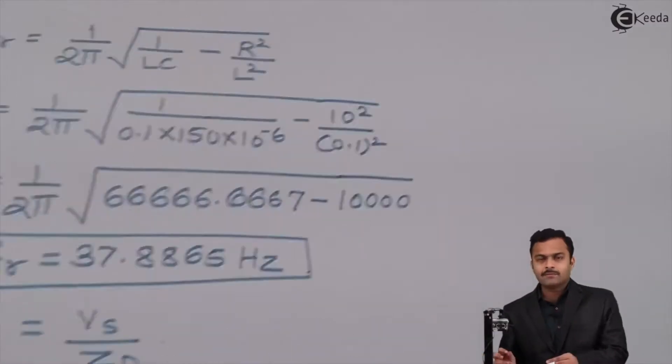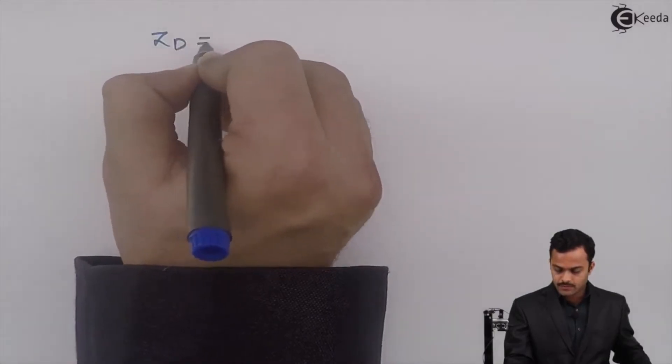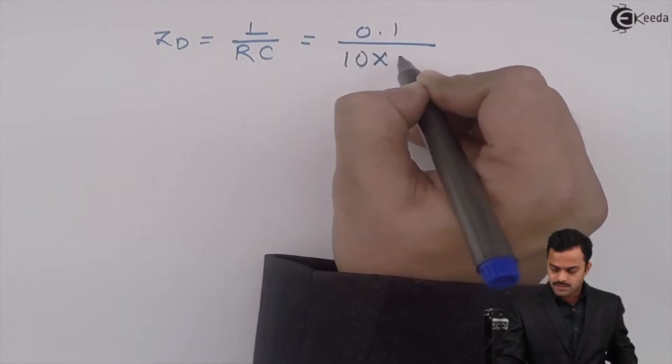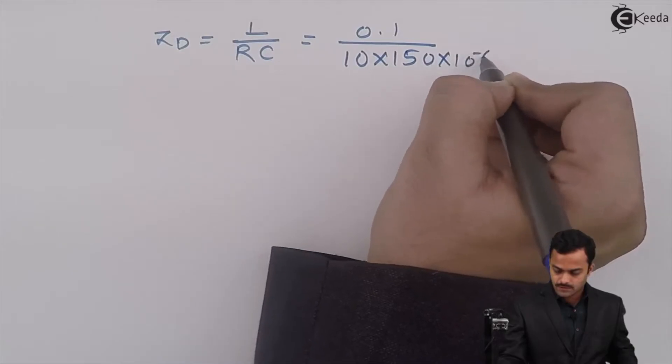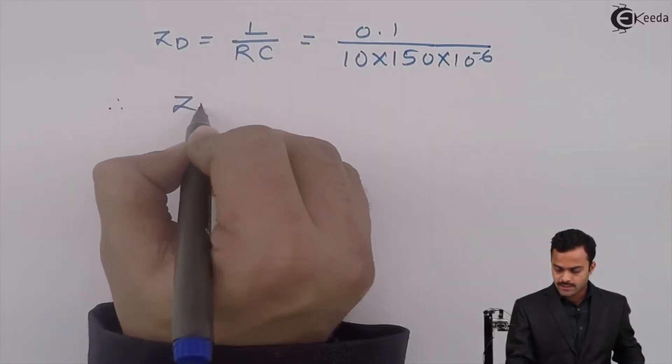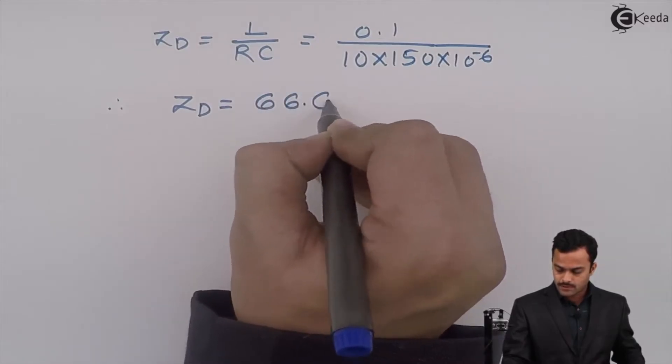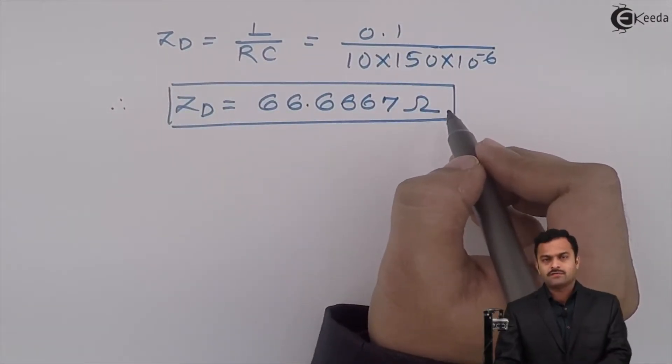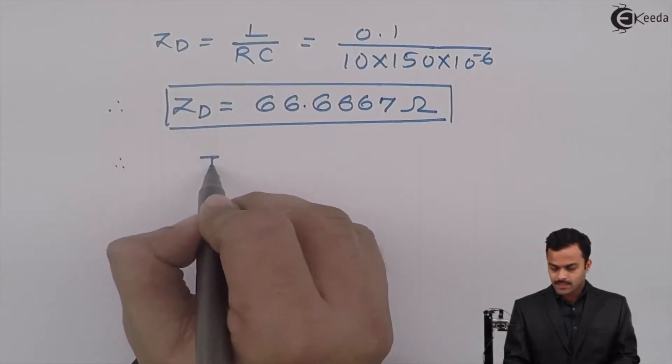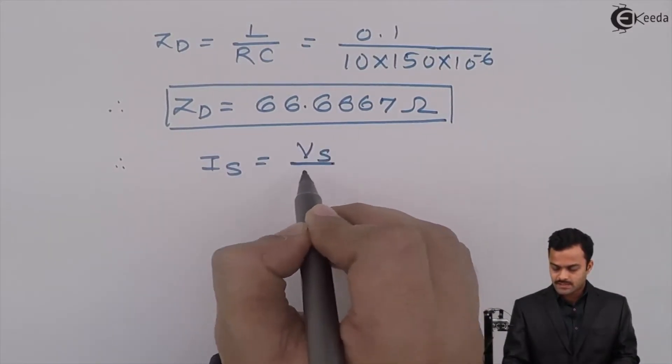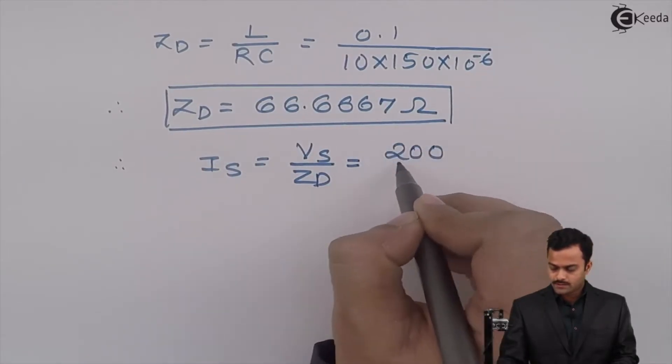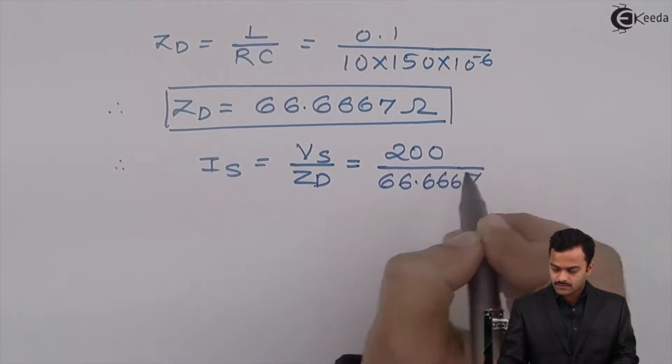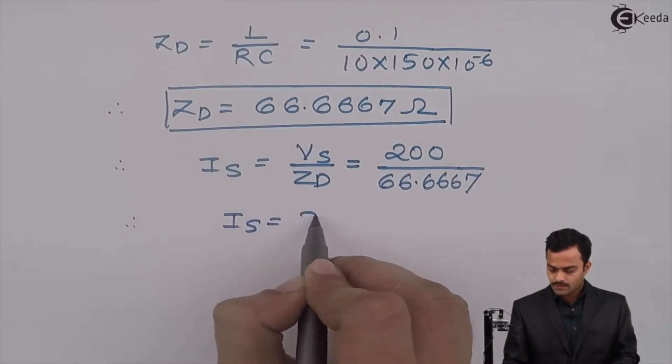Which formula can be written as Zd equal to L upon RC. So L is 0.1, r is 10, C is 150 microfarad. If you solve you will get Zd equal to 66.6667 ohm. And once you know the value of Zd, I can get supplied current which is equal to Vs by Zd equal to 200 divided by 66.6667, nothing but 3 ampere.